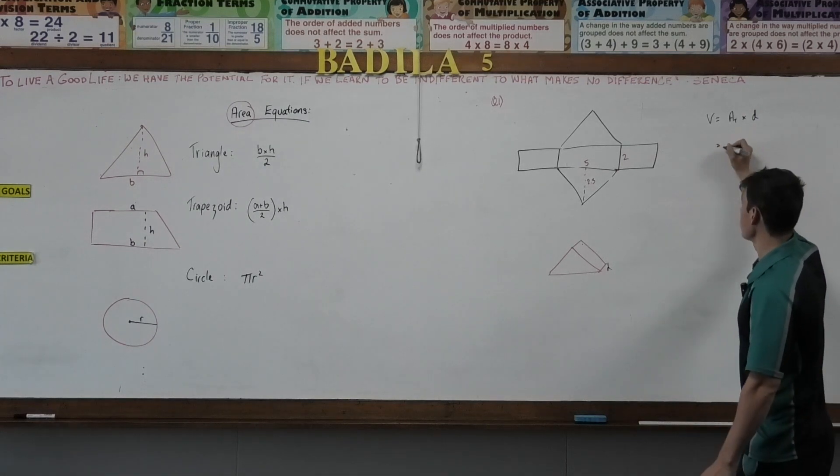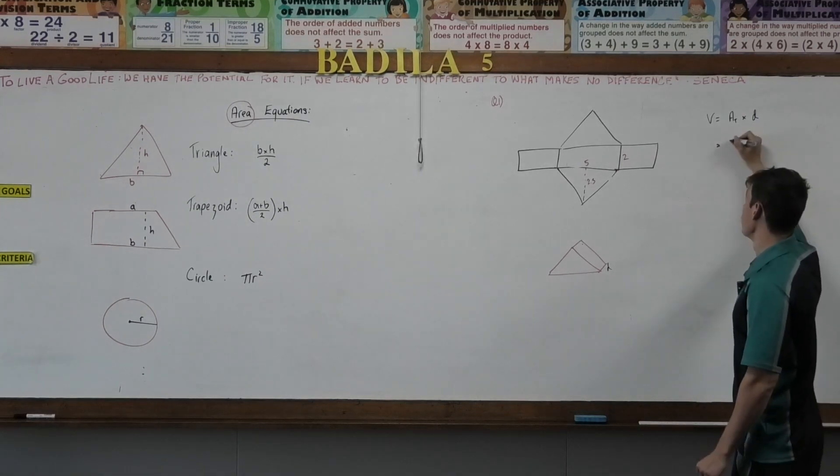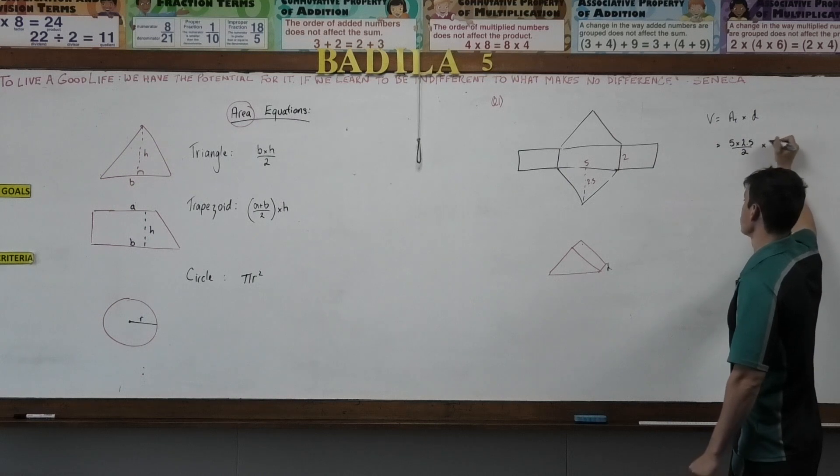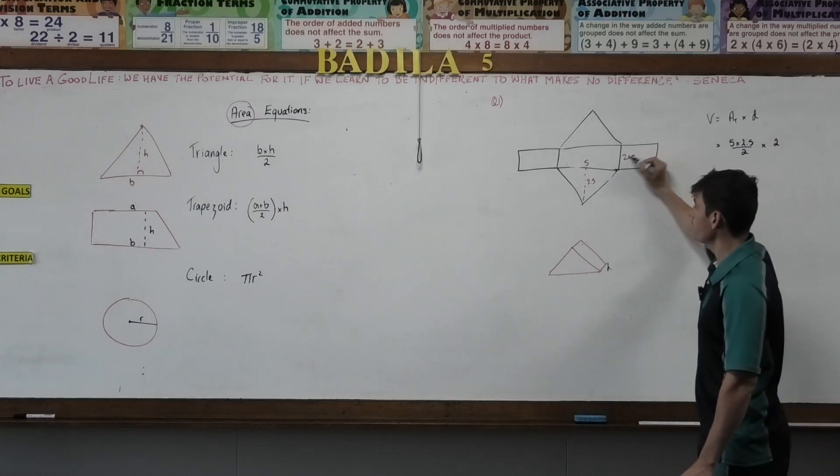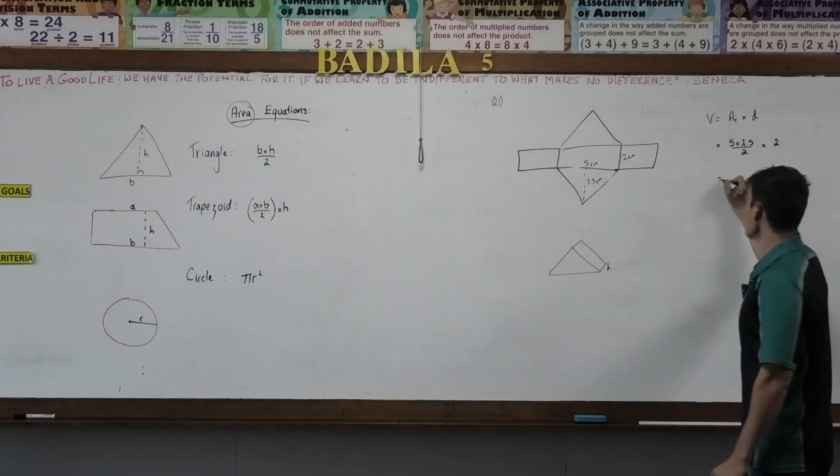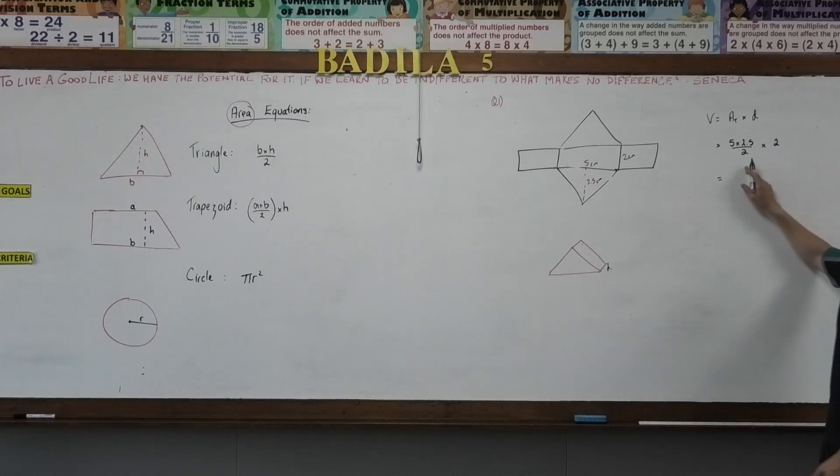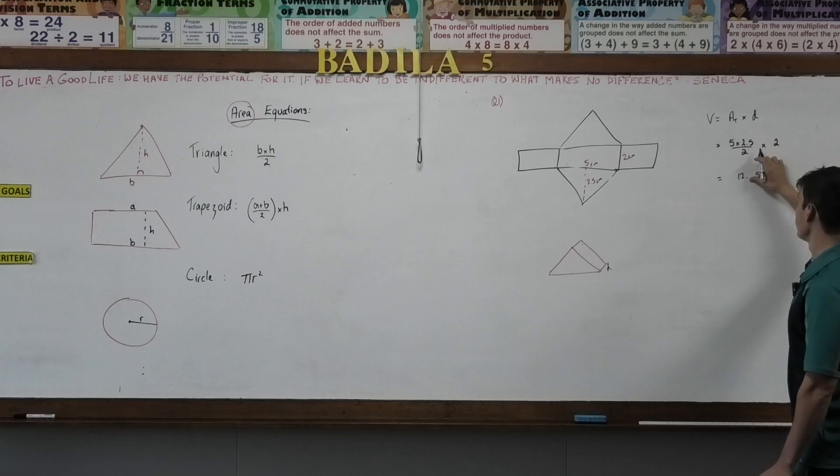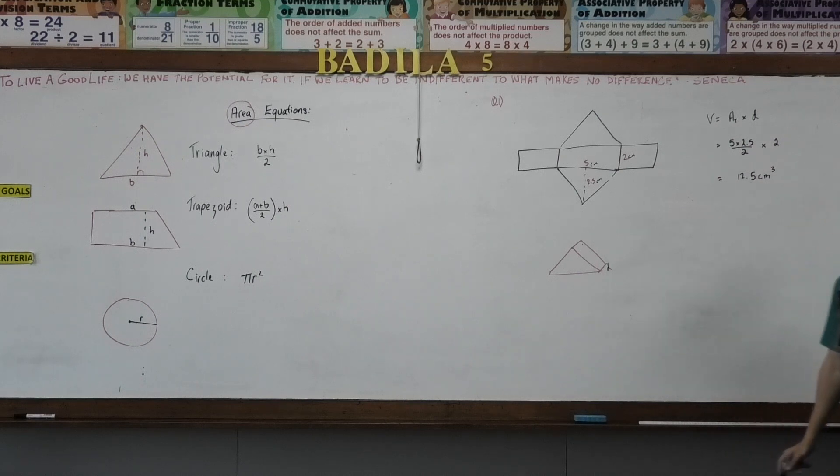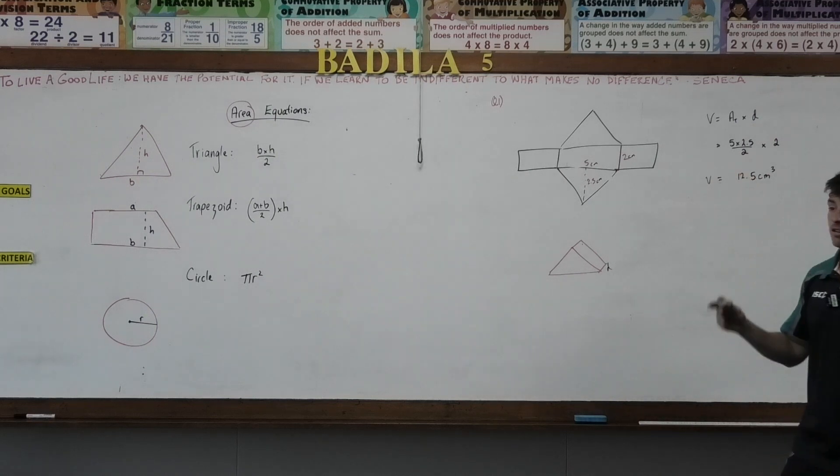So the area of my triangle equals half base, which is 5, times 2.5, divided by 2, times my depth, which is 2. And I forgot to put my units down, but they're all centimeters. So my volume therefore equals 5, 12.5 centimeters cubed. That's my volume. Very easy, once I know the area of my cross section.